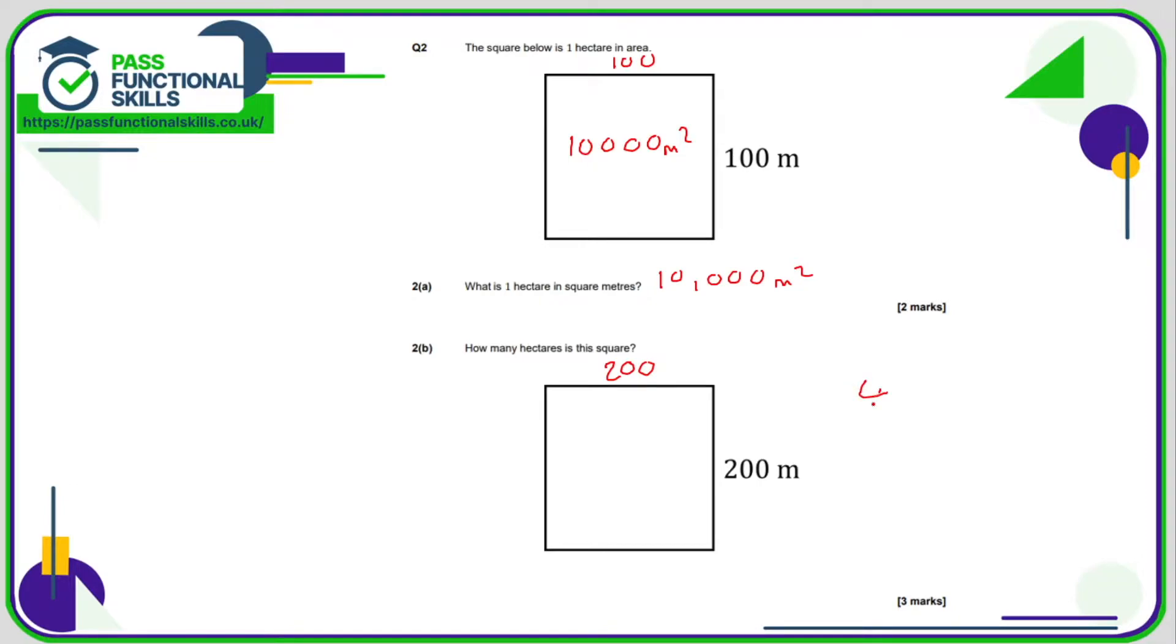Well, 2 times 2 is 4. We ignored four zeros, so let's just put them back in again. So 200 times 200 is 40,000 square meters. And 1 hectare is 10,000, so this is 4 times bigger, so therefore there are 4 hectares, not 2, in a 200 by 200 square.